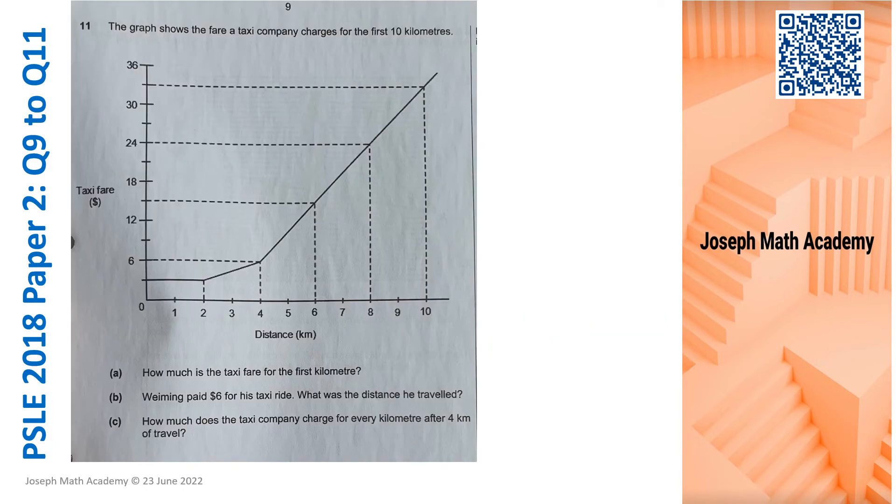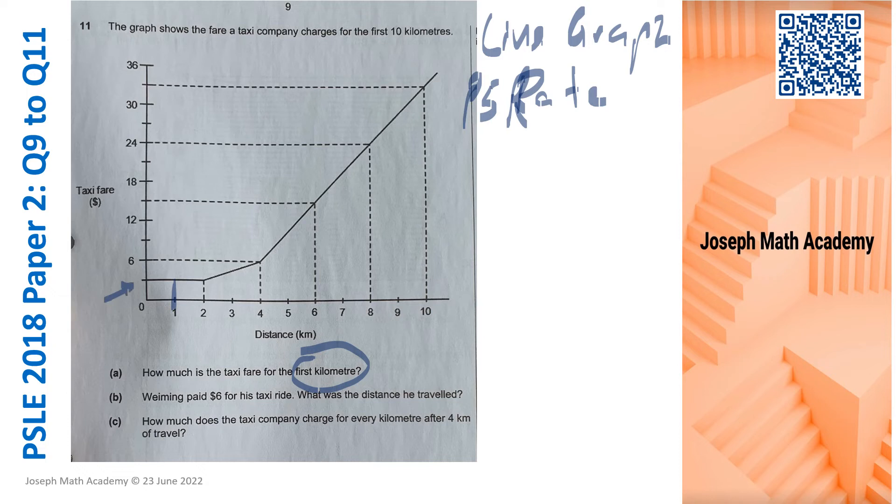Question 11 is using line graph. And it's about rate. Rate is a P5 chapter. Now let's continue. How much is the taxi fare for the first KM? First KM means here. So looking carefully, it is multiples of three. So this is $3. So A is done, $3.